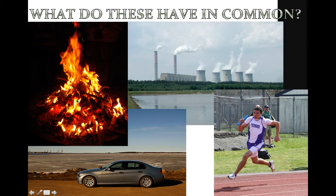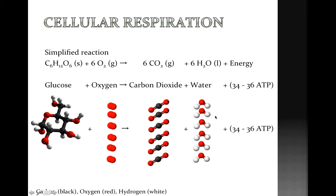Similar to the fire that needs wood, air, oxygen, and a flame to start — and the car needs gasoline, air, and a spark from the battery — the power plant also needs fuel, air, and fire to start the reaction. The same way, we need glucose as our combustible material, we breathe in oxygen through our lungs, and the oxygen is driven into the cells. As the result of cellular respiration, we produce carbon dioxide and water. Those are the simplified results of the cellular respiration process.